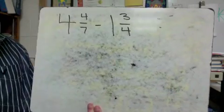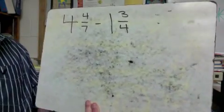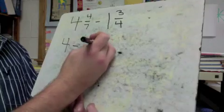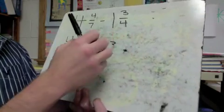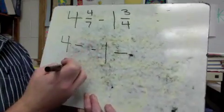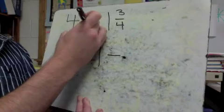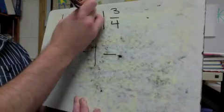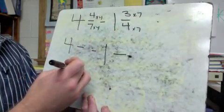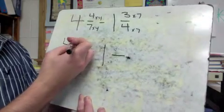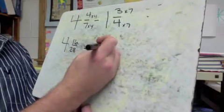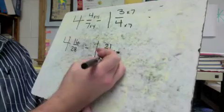Let's start with the first one: four and four-sevenths minus one and three-fourths. Let's get a common denominator. I would say we should go with twenty-eight — times four and times four, and times seven and times seven. Four times four would be sixteen, and then we've got twenty-eight take away twenty-one, twenty-eight.